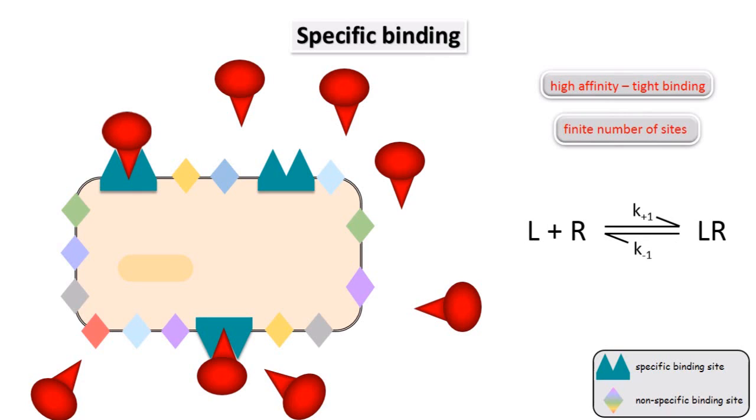Binding at equilibrium is described by the equation shown here, where L is the ligand, R is the receptor, and LR is the ligand receptor complex. K plus 1 and K minus 1 are the rate constants governing the binding reaction.